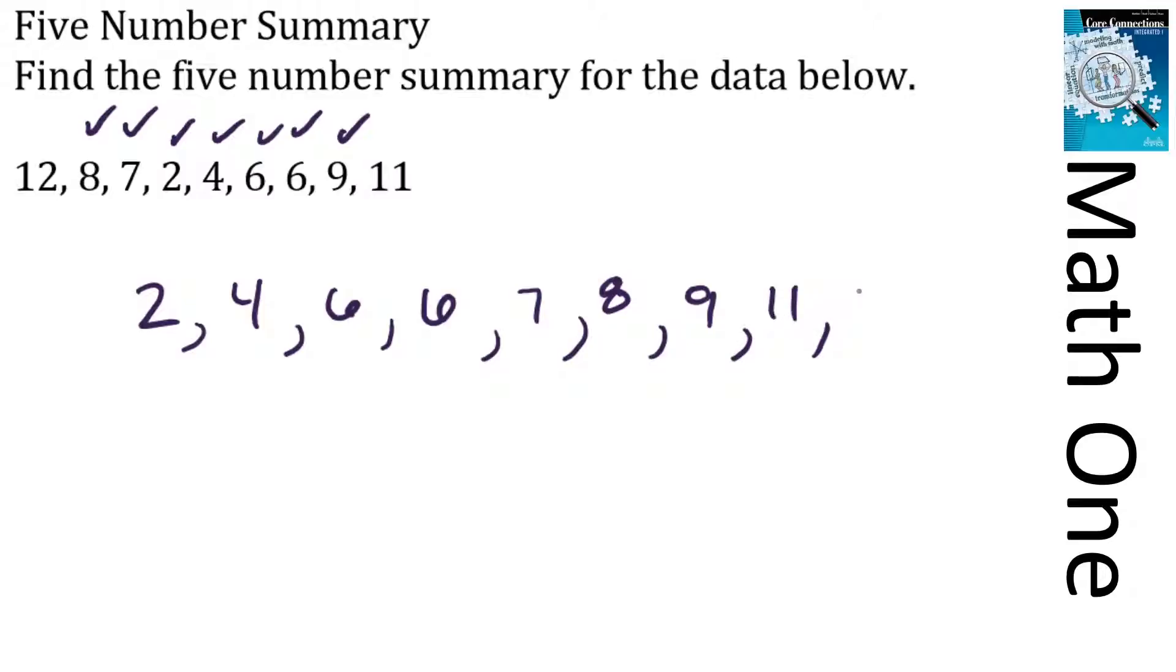So the minimum value is one of our values in our five number summary, and the minimum is pretty easy to see - it's the smallest number in our data set, so our minimum is 2. And on the other end of that, our maximum value is the number 12.